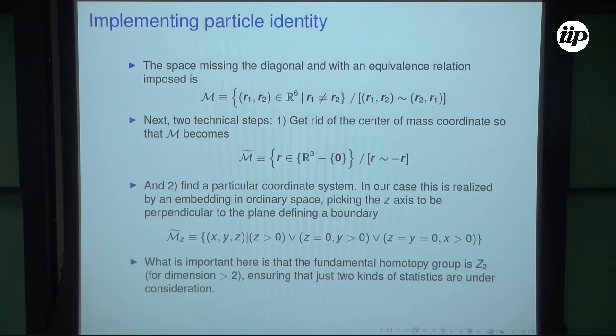The main thing is that the fundamental homotopy group is Z2. And that's for dimension greater than two. For dimension equal to two is another very interesting question. It has to do with anyons. And I'm not going to talk about anyons at all. The reason for anyons is that in dimension two, the fundamental homotopy group is not Z2, but it's much more complicated. And it's in fact non-abelian. This space is also non-orientable, but that doesn't play any role in what we're going to be doing.